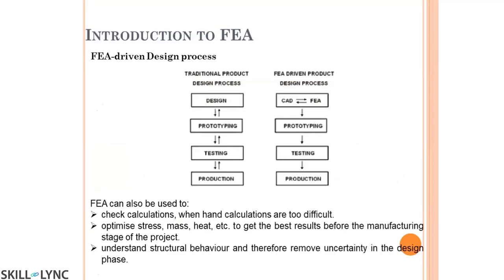Why do we need FEA? In the traditional approach, a design is converted into a prototype, tested, and then production begins. This process is back and forth — if the prototype fails in testing, it goes back to design, a new prototype is made, and testing is repeated. This loop can be practically infinite, and since time is money, this significantly affects cost.